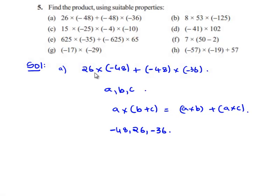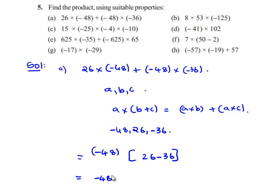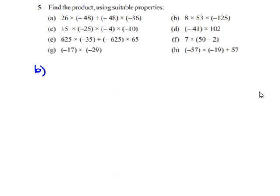Therefore, 26 times negative 48 plus negative 48 times negative 36 can be written as negative 48 times (26 minus 36). This gives negative 48 times negative 10. 48 into 10 gives 480. As the signs are similar, we get a positive sign. Therefore, the answer is plus 480.